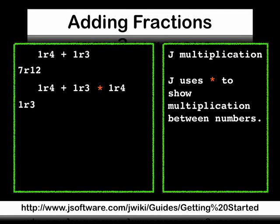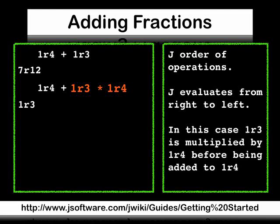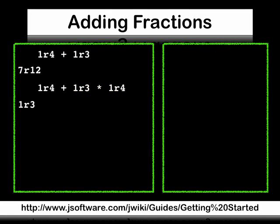J uses the asterisk to show multiplication between numbers. J evaluates from right to left. In this case, 1 third is multiplied by 1 quarter before being added to 1 quarter. The answer is 1 third.